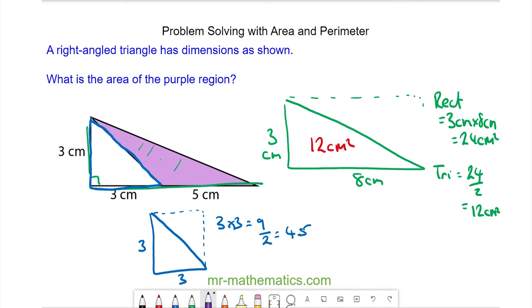So the purple area would be the green triangle 12 centimeters squared take away the blue triangle 4.5 centimeters squared. So the purple area will be 7.5 centimeters squared.